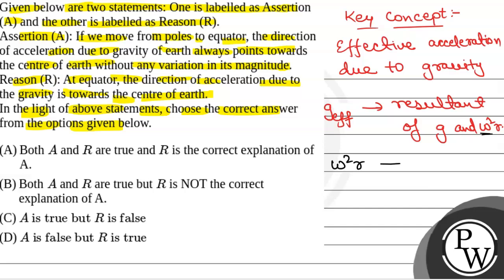So omega square R—the direction and magnitude of G-effective depends on theta, depends upon theta.